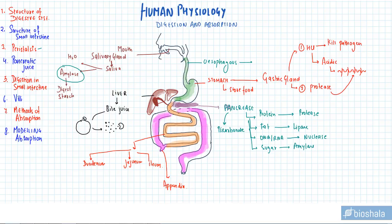The small intestine opens into the large intestine. All the secretions from the stomach, liver, and pancreas have enough time to act in the small intestine, since it is the longest portion. The small intestine's main role is to digest food and absorb it. The large intestine mainly deals with the absorption of water.